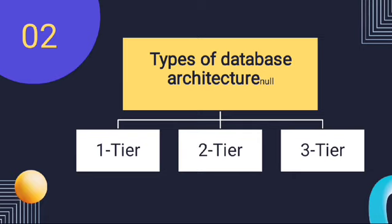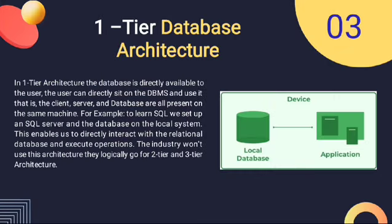Now we will look at the types of database architectures: one-tier, two-tier and three-tier. Starting with one-tier architecture: in the one-tier architecture, the database, user interface and the application logic all reside on the same machine or server. It is typically used for small-scale applications where simplicity and cost-effectiveness are prioritized, because there are no network delays involved and this type of tier is generally a fast way to access the data.